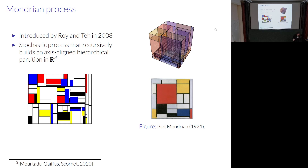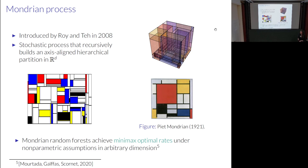There are many nice properties of this process from an algorithmic perspective, which were the main reasons it was introduced. But what I want to focus on is that Mondrian processes turned out to be a very nice class of purely random forest variants from a theoretical perspective — because they were the first-ever class of random forests to achieve minimax optimal convergence rates in arbitrary dimension. In some asymptotic worst-case sense, this class achieves the best possible error rate as the amount of data goes to infinity.